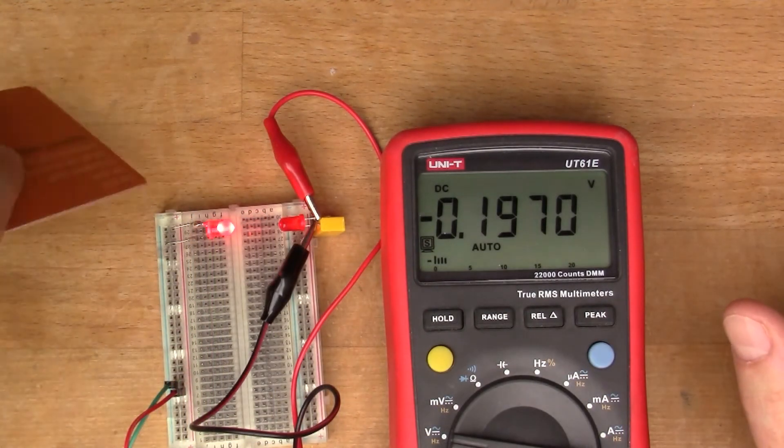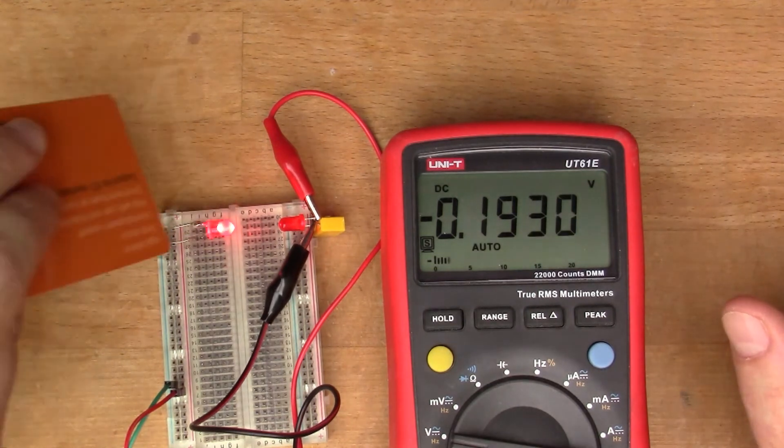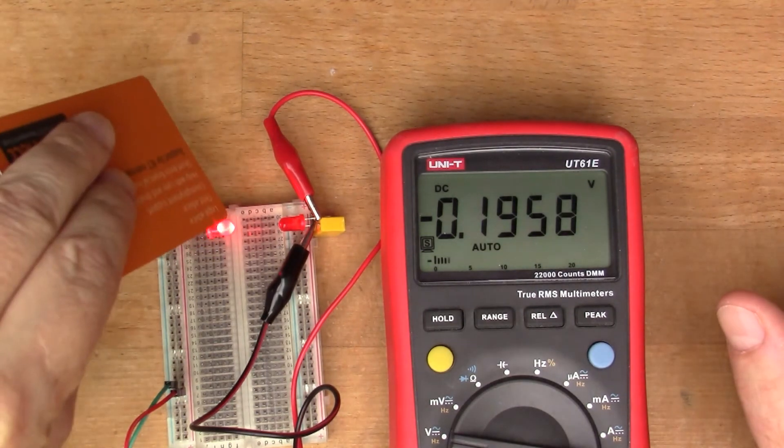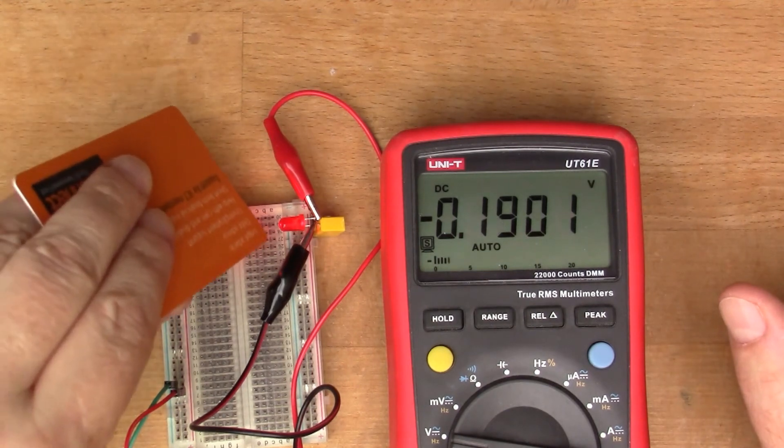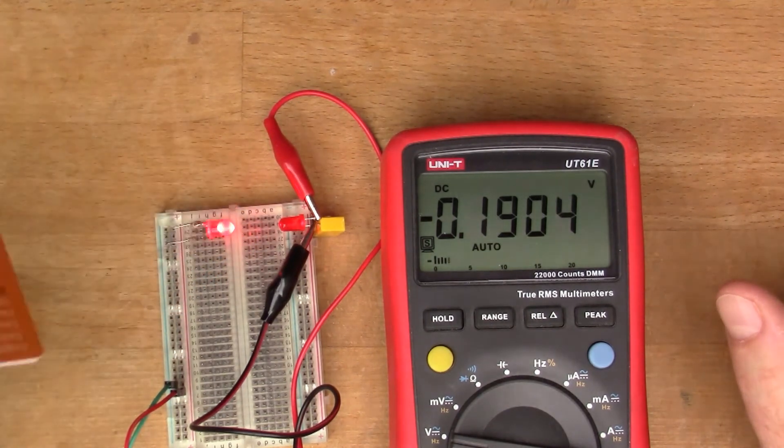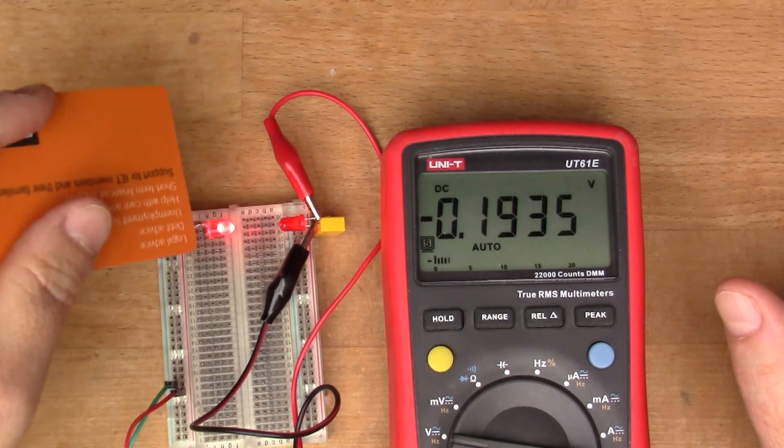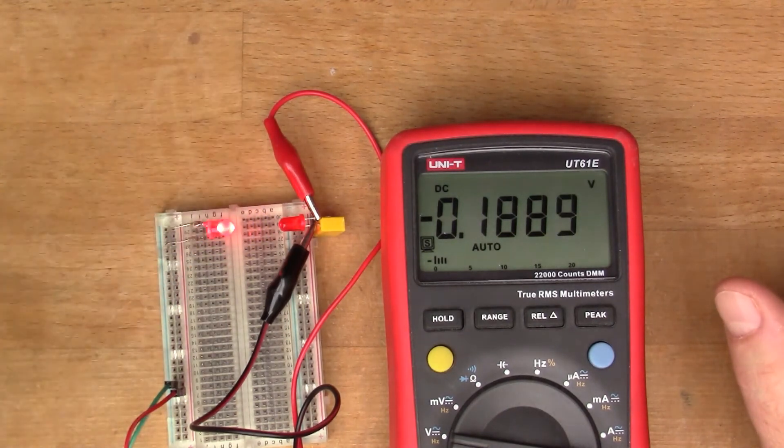Once again we've got on the left hand side the LED being powered by five volts from my power supply. And on the right that's just the bare, similar type of LED, a red LED.